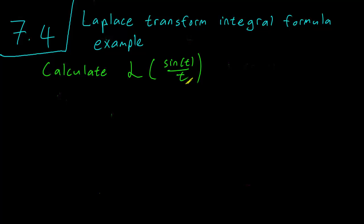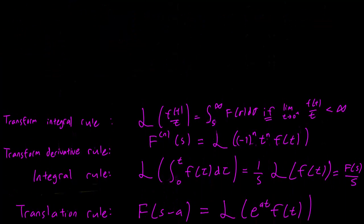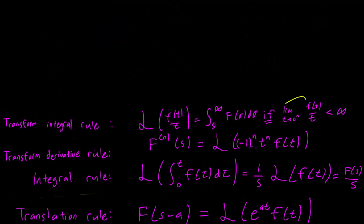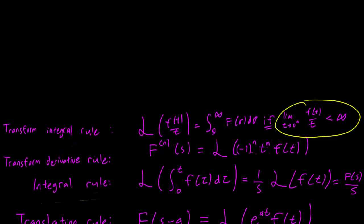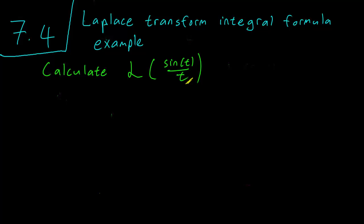So let's do this calculation. The first step is to remember—I have written down here another rule—that we have to first check that the limit of f(t) over t as t goes to 0 is going to be finite. Let's do that, and that's typically a really simple L'Hôpital rule.